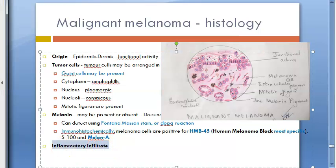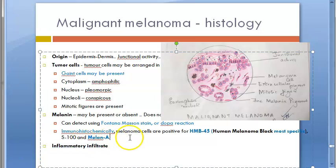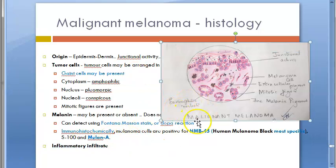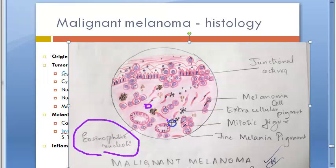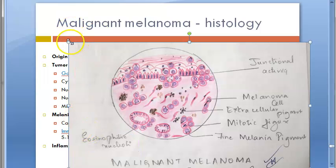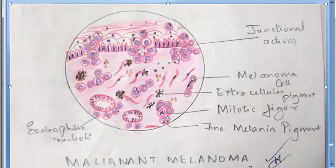Looking at the diagram again: note that the nucleoli are eosinophilic, meaning they should appear pink. You can see a pink dot within the nucleus — this is the eosinophilic nucleolus. Also draw some inflammatory cells such as neutrophils and macrophages in the diagram.